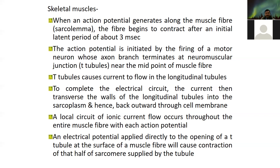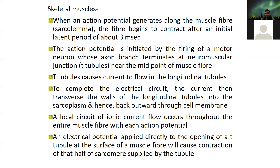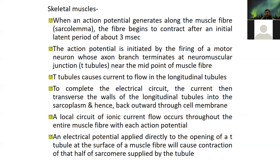The electrical circuit will not be complete until the T-tubules connect from the longitudinal tubules towards the whole sarcoplasm. The local circuit will comprise the ionic current flow. Ionic current flow means calcium — calcium that has been discussed in the last class, where a certain amount of calcium is released. When this happens in the entire muscle fiber, it occurs in specific muscles.